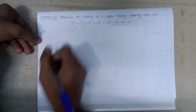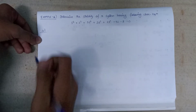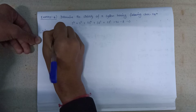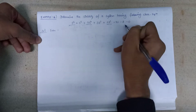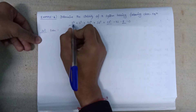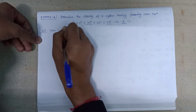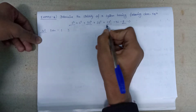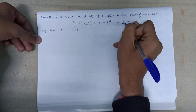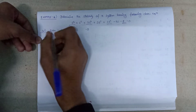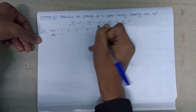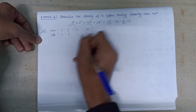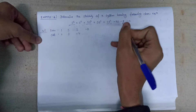Let's identify the even and odd coefficients of s. The even coefficients correspond to s⁶, s⁴, s², and s⁰. The coefficient of s⁶ is 1, s⁴ is 5, s² is 2, and s⁰ is -8. The odd coefficients correspond to s⁵, s³, and s¹: coefficients are 1, 3, and -4, with 0 for the remaining column.